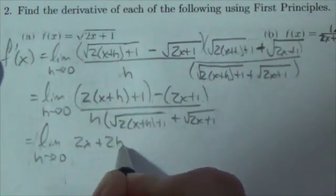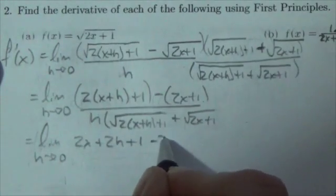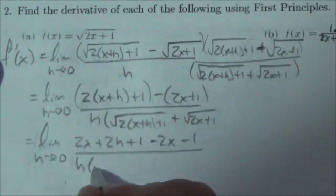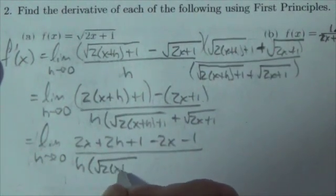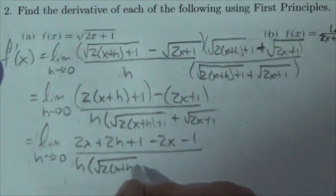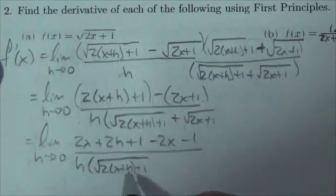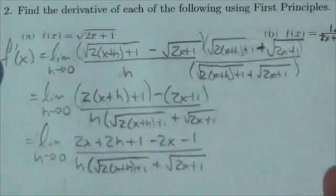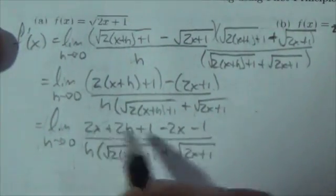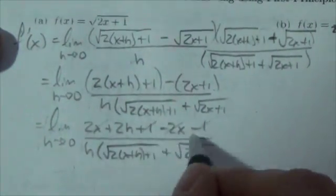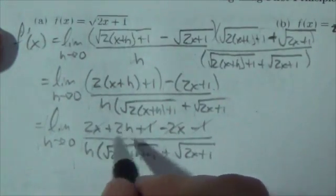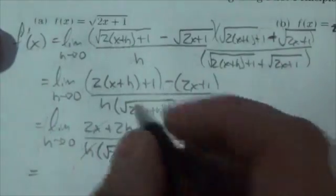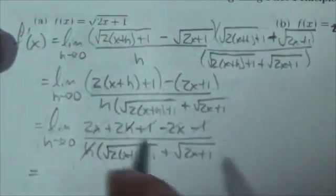When I distribute that through I'm going to get 2x plus 2h plus 1 minus 2x minus 1 all over h times the square root of 2x plus h plus 1 plus the square root of 2x plus 1. Now watch what happens, and this always happens: the 2x cancels the 2x, the 1 cancels with the 1. I've got 2h over h, the h's are going to disappear.